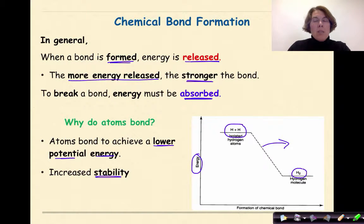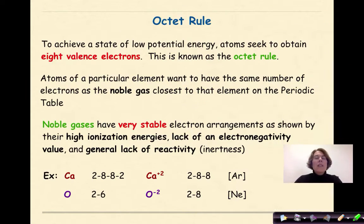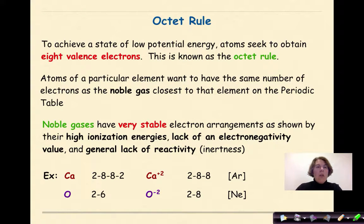Now let's talk about the octet rule. To achieve a state of low potential energy where our molecules are much more stable, atoms seek to obtain eight valence electrons. This is known as the octet rule. Atoms of a particular element want to have the same number of electrons as the noble gas closest to that element on the periodic table.